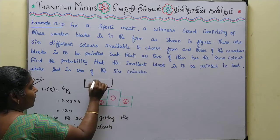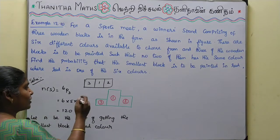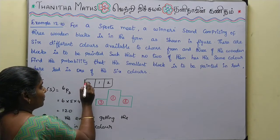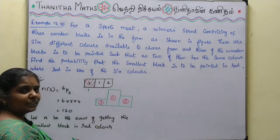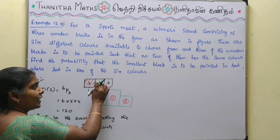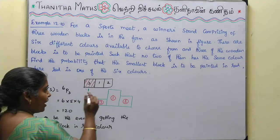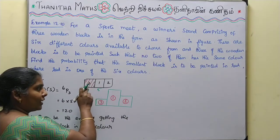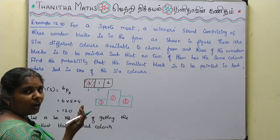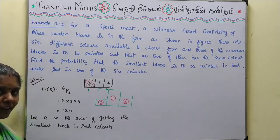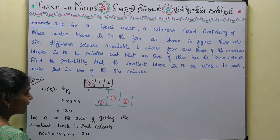The smallest block corresponds to 3rd place. If we fix red color for the smallest block, there is only 1 way to paint it red. Then for the 1st place block we can use 5 colors, and for the 2nd place block we can use 4 colors. So n of A is equal to 1×5×4, which equals 20 ways we can paint.